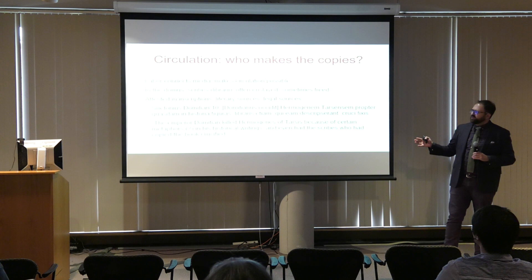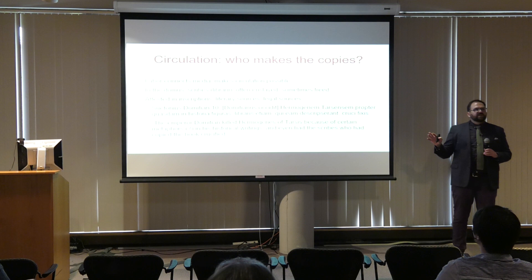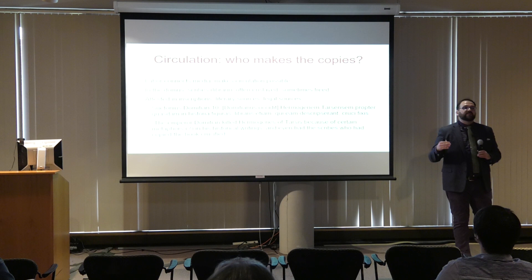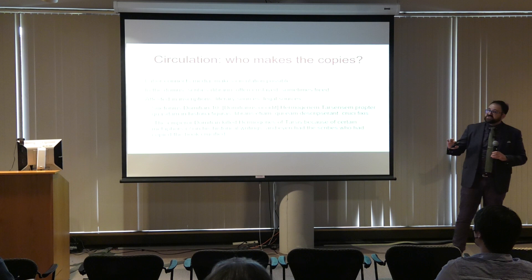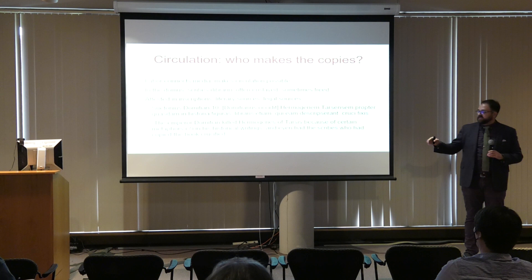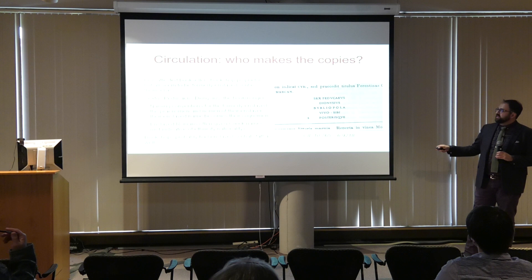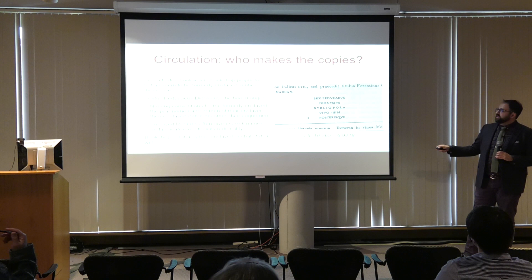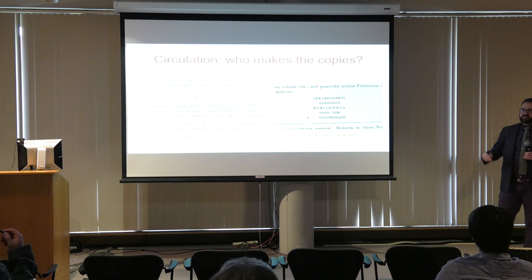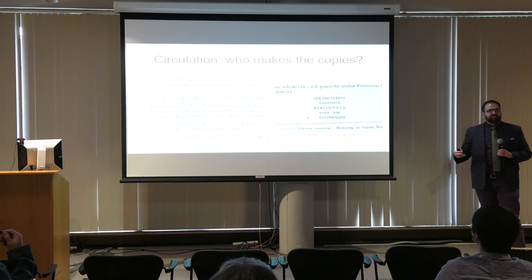One of the big questions about Roman book circulation is what the relationship is between books being made in houses as part of gift exchange and books made for commercial sale in bookshops. We really don't have a good model for that ratio. So who makes the copies? Labor is what connects these different forms of media and makes circulation possible. We do know a lot about who's copying books in ancient Rome: these are enslaved people — scribes who are enslaved.